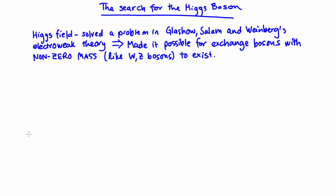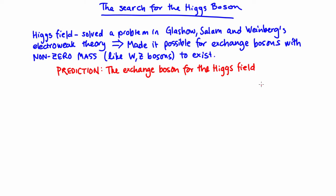Theories are only as good as the experiments we use to test them. This is where the Higgs boson comes in. The Higgs field has to have a way to communicate with particles that interact with it, meaning it needs an exchange boson as well. The Higgs boson is this exchange boson, and it has a few specific predicted properties: it's a fundamental particle with zero spin, no charge, and non-zero mass.